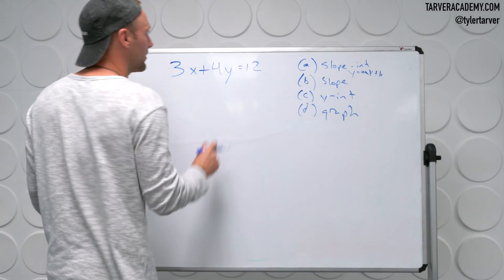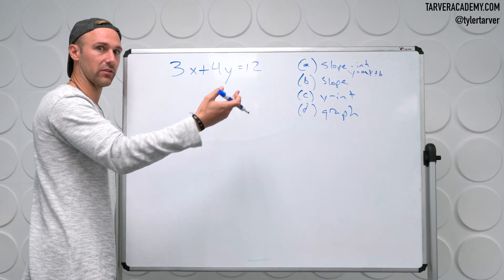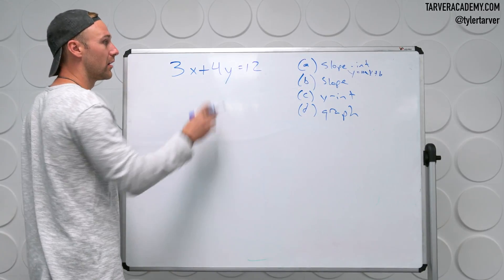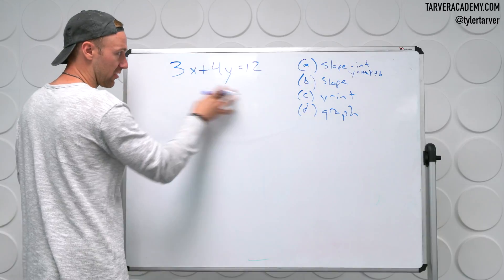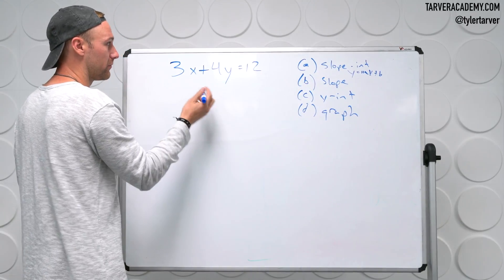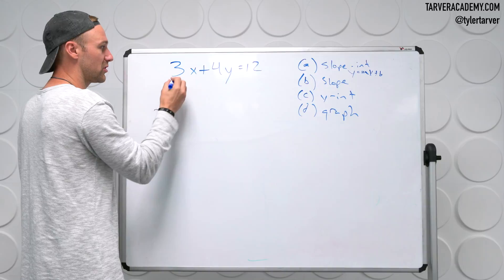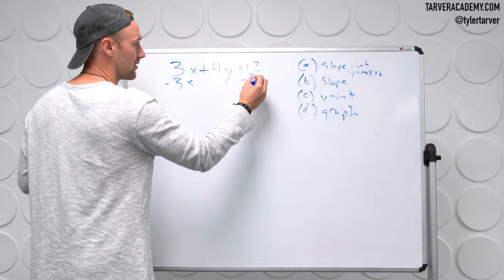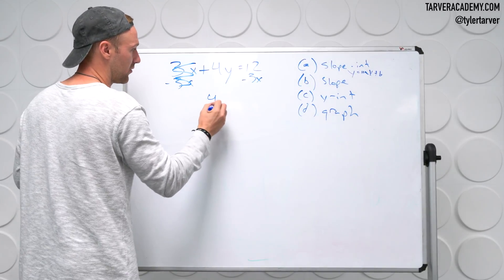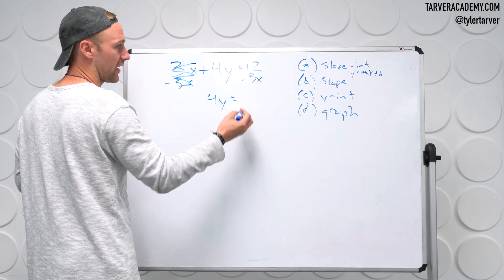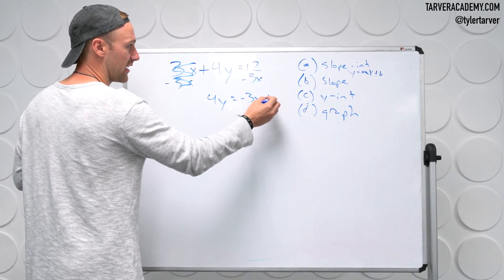So y equals m of x plus b, which means we essentially have to get y by itself. To do that, we've got to get rid of the 3x, and then get rid of the 4. Since it's positive 3x, we just subtract it from both sides. That cancels out, leaving 4y, and then we've got negative 3x and positive 12.